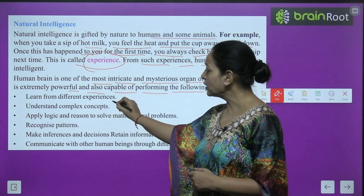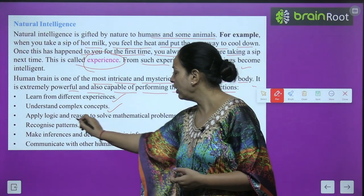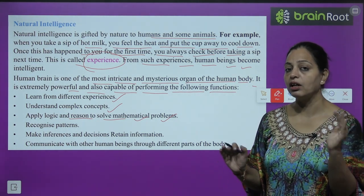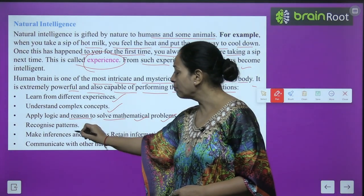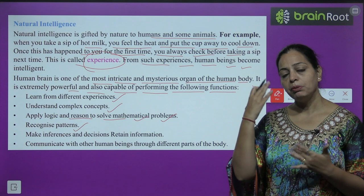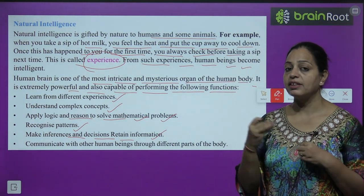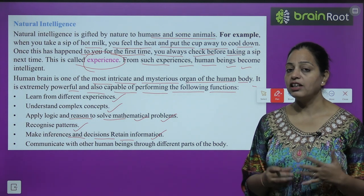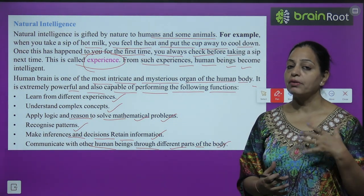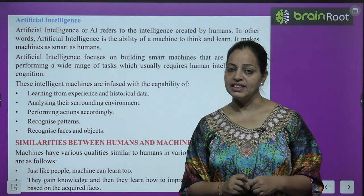The human brain can learn from different experiences, understand complex concepts, apply logic and reason to solve mathematical problems, recognize patterns, make inferences and decisions, retain information, and communicate with other human beings through different parts of the body.